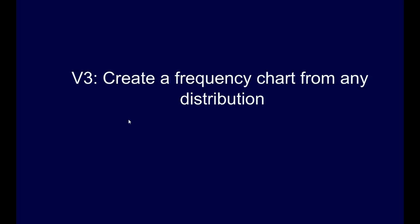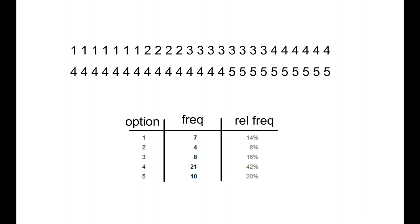Now we're going to merge a couple concepts by creating a frequency chart from a continuous distribution. Earlier we looked at what happens if you have just 1s, 2s, 3s, 4s, and 5s. It's pretty easy to set the options, count up how many of each one there is, and even calculate the relative frequency by dividing each number by the total.